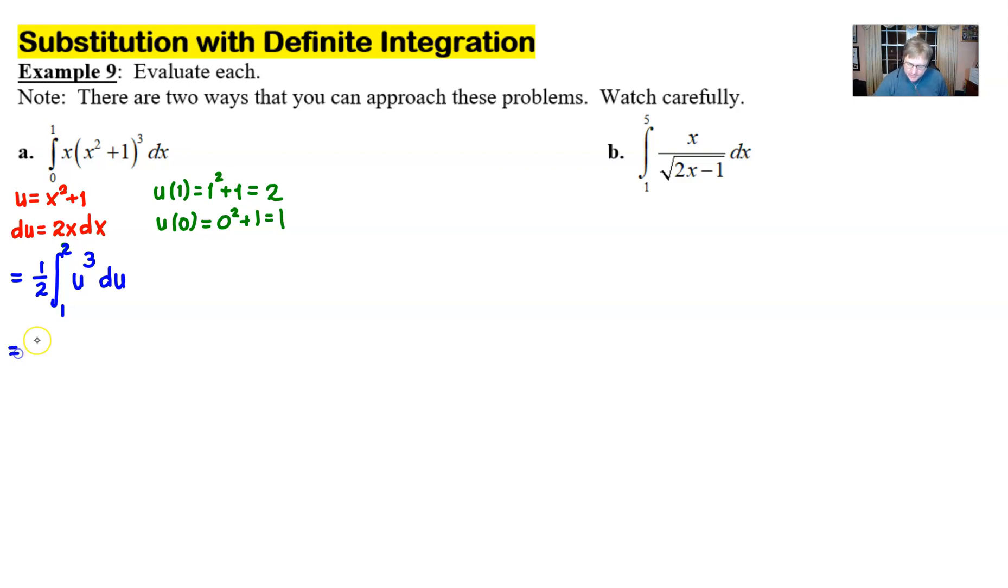Now the cool thing about this technique is that when we finish this and we integrate u to the third to get u to the fourth over 4 of course we do not have to back substitute. Pretty cool huh? In other words we can just rewrite this as 1 eighth plug our 2 in we'll have to raise it to the fourth subtract plug 1 in raise it to the fourth and we end up with basically 16 minus 1 which is 15 all divided by 8 as our answer.